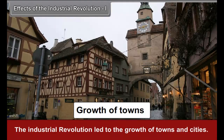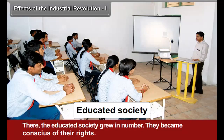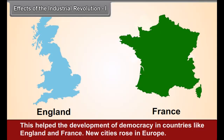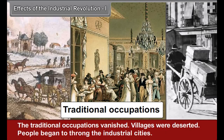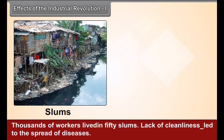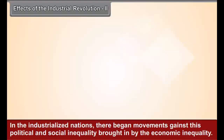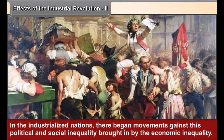The Industrial Revolution led to the growth of towns and cities where the educated society grew in number. They became conscious of their rights, which helped the development of democracy in countries like England and France. New cities rose in Europe, traditional occupations vanished, and villages were deserted as people began to throng the industrial cities. Thousands of workers lived in filthy slums, lack of cleanliness led to the spread of diseases, and workers had to live a wretched life. In the industrialized nations, movements began against the political and social inequality brought in by economic inequality.